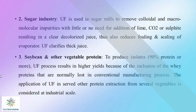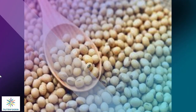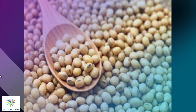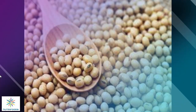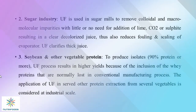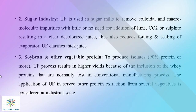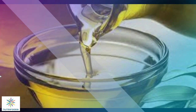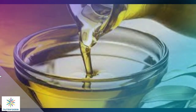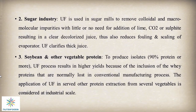Next, in soybean processing industries, whenever isolates with 90% protein or more need to be produced, the ultrafiltration process results in higher yield because of the inclusion of whey proteins that are normally lost in conventional manufacturing processes. The application of ultrafiltration for protein extraction from several vegetables is also considered at an industrial scale.